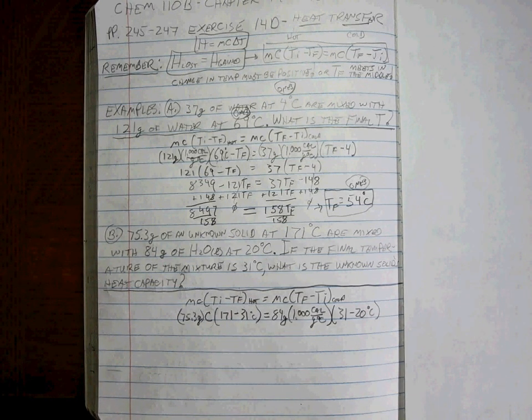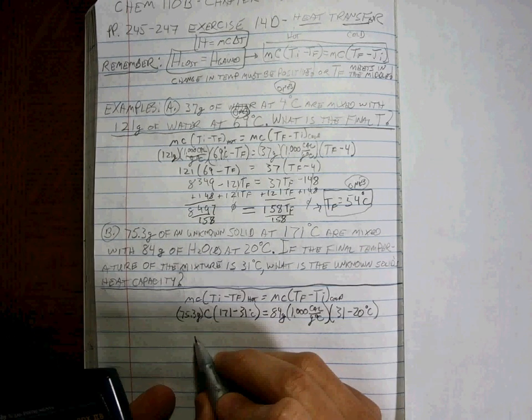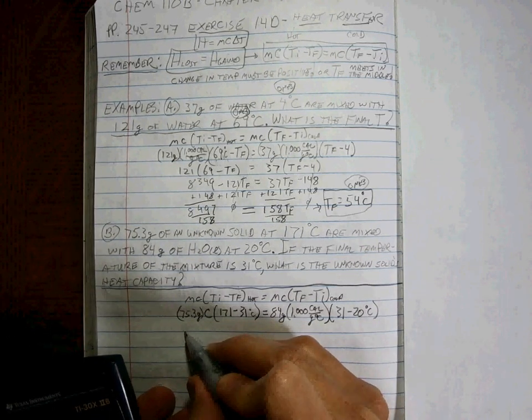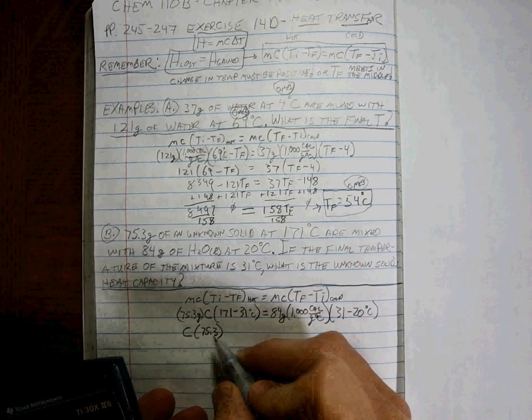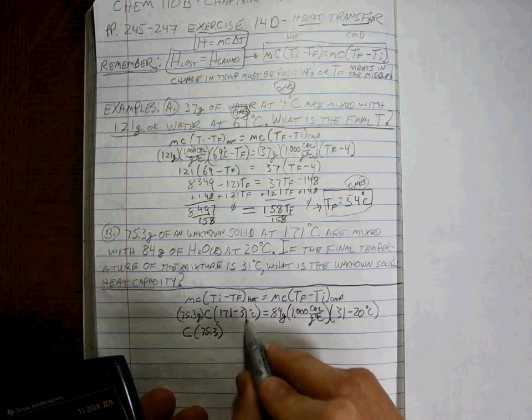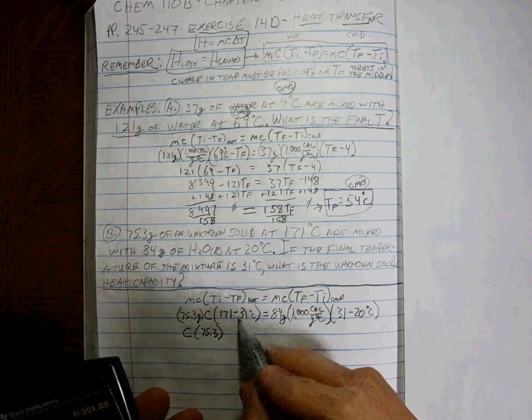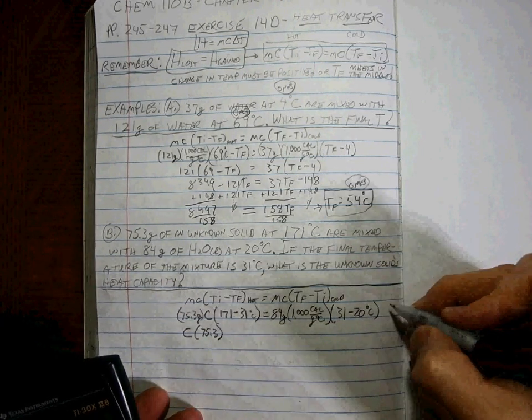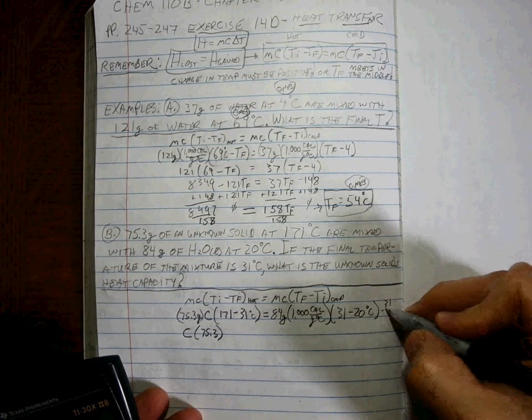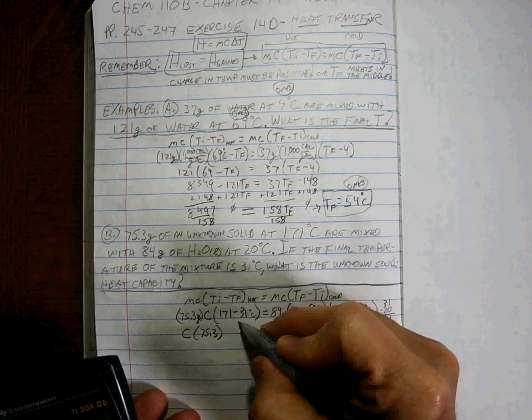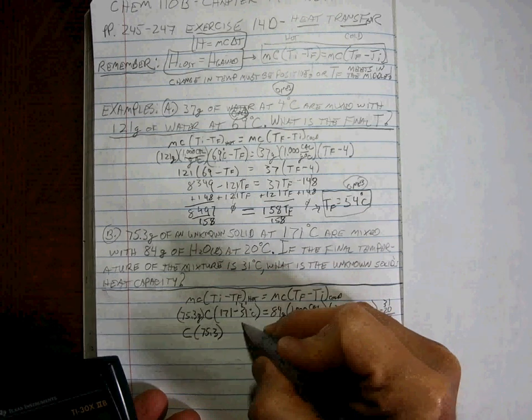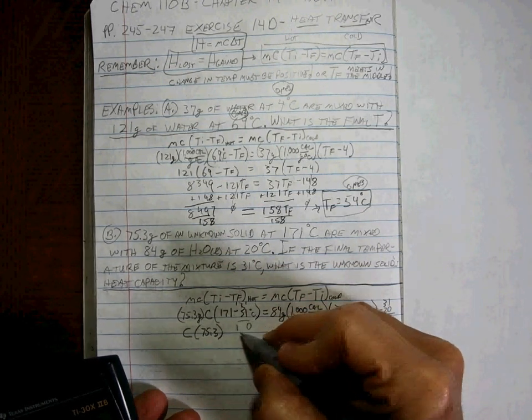Let's just go C times 75.3. And remember, whenever we do this addition-subtraction, you'd better draw your lines. 171 minus 31 is 140.